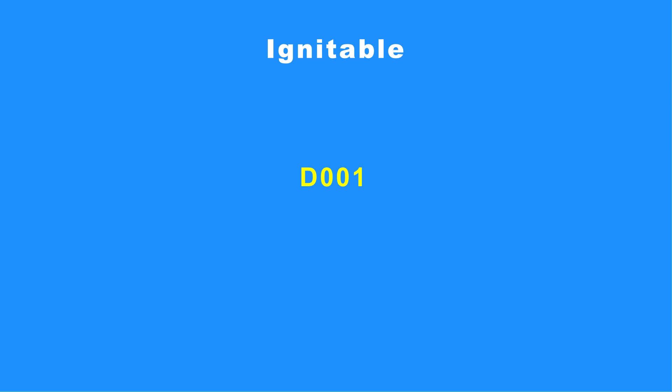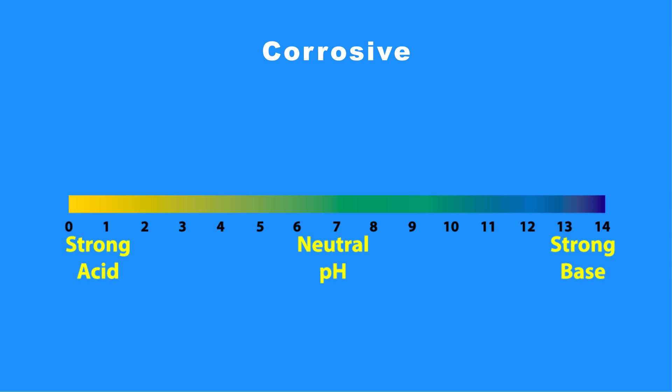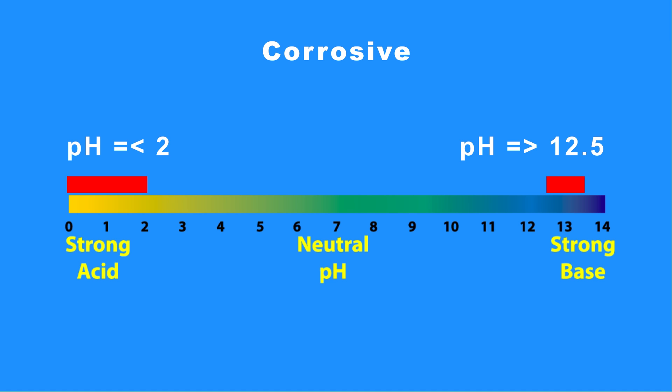EPA has assigned D001 as the waste code for ignitable hazardous waste. Corrosive: Wastes that are hazardous due to the corrosivity characteristic include aqueous waste with a pH of less than 2 and a pH greater than or equal to 12.5, or based on the liquid's ability to corrode steel. EPA assigned D002 as the waste code for this type of waste.